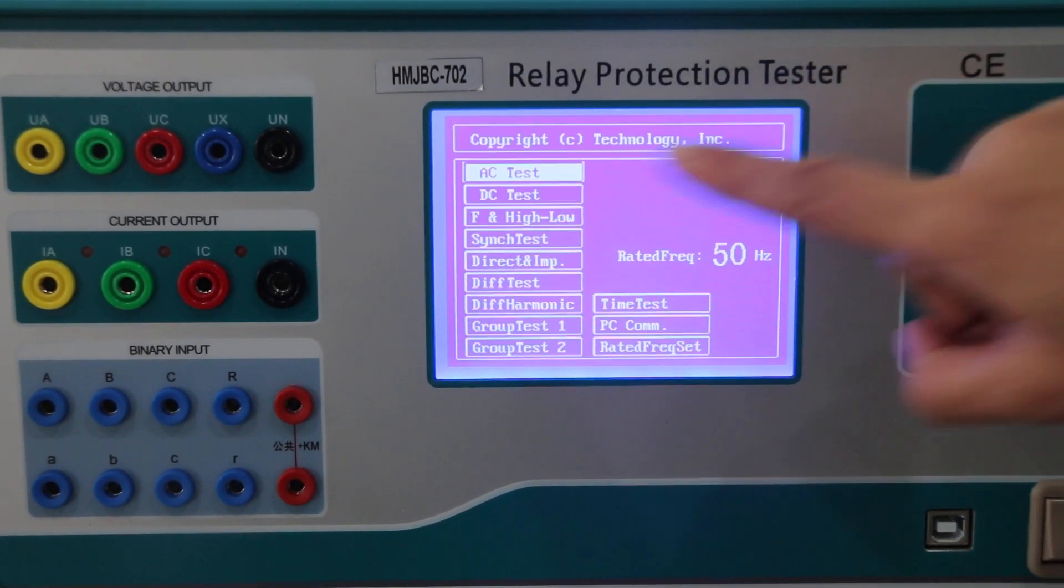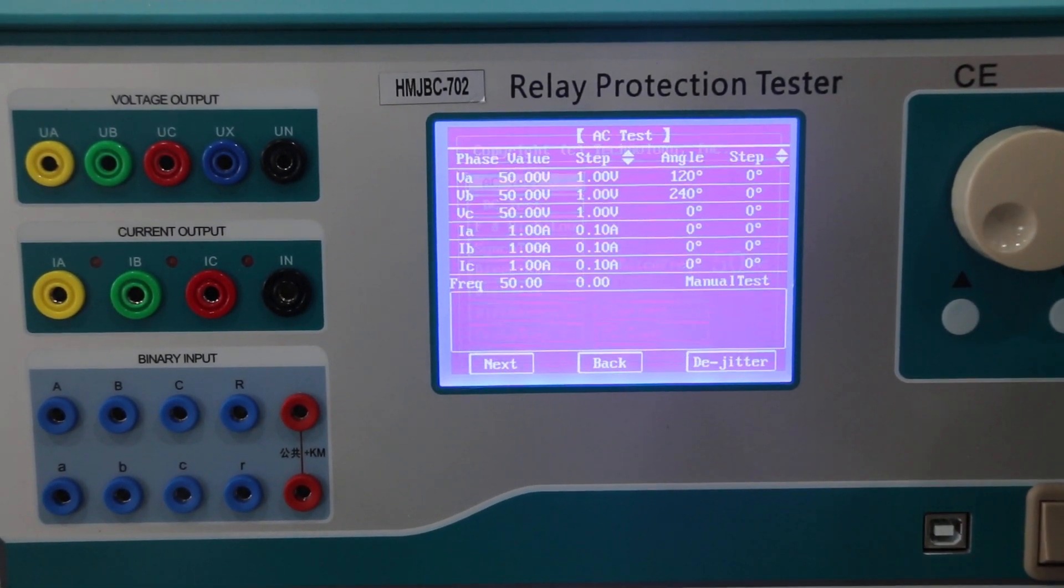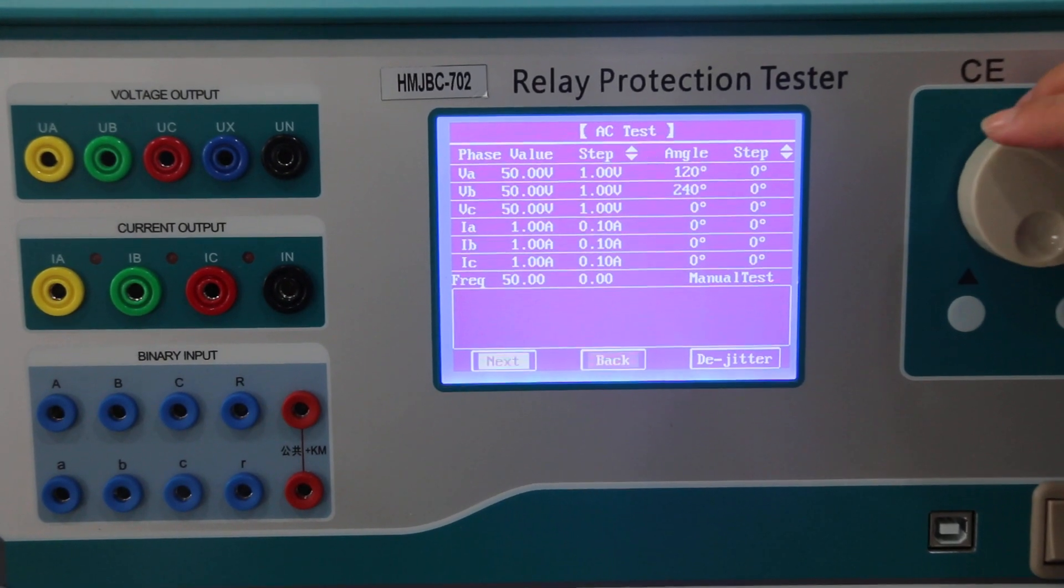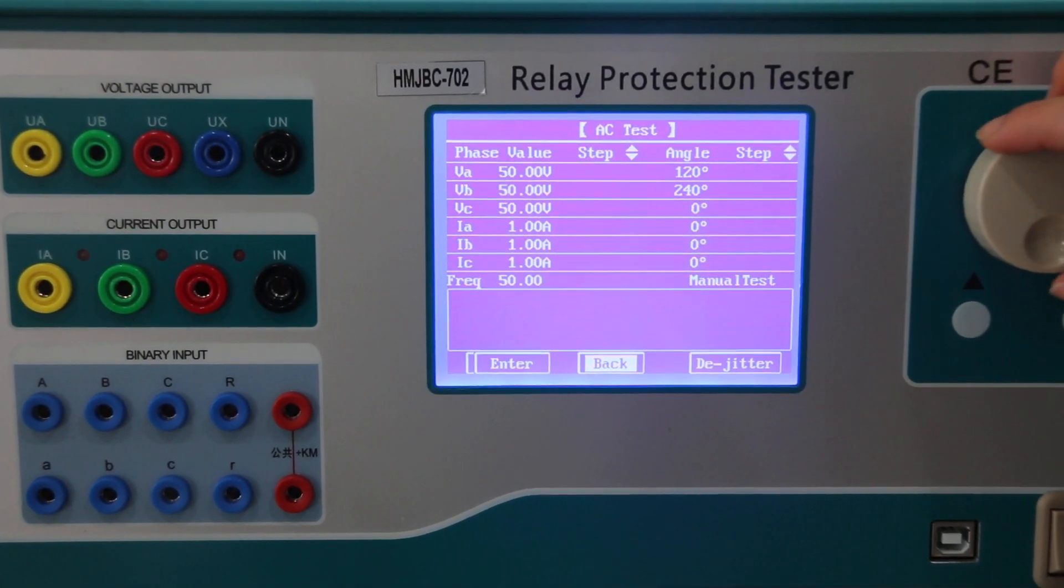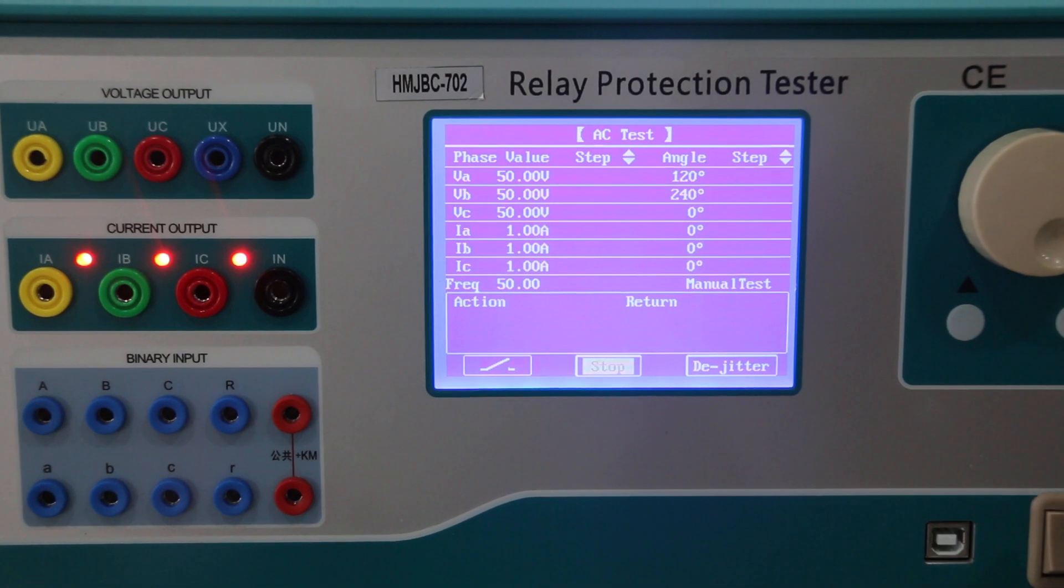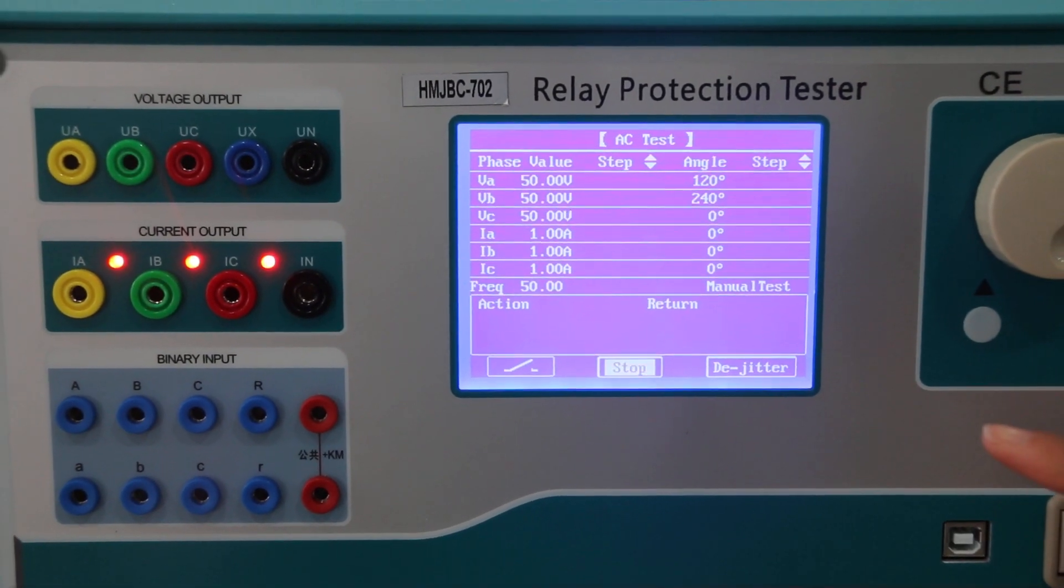Now we'll perform the AC test. Choose the AC test option, press confirm, then next, then enter. Now it's in testing mode.